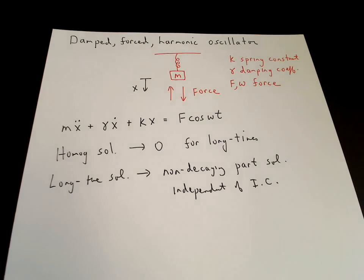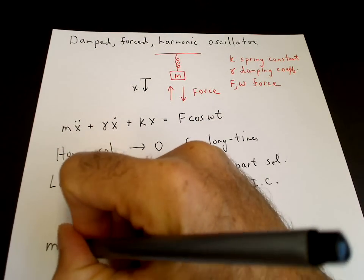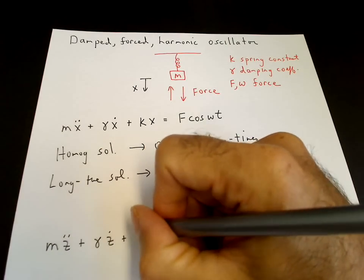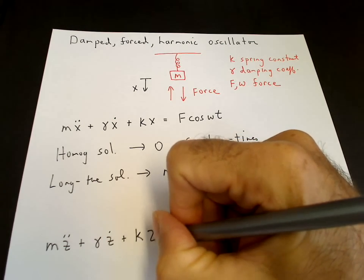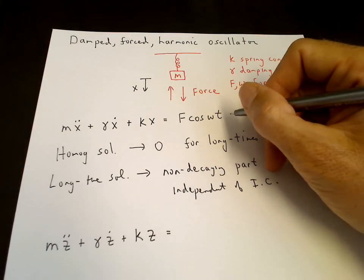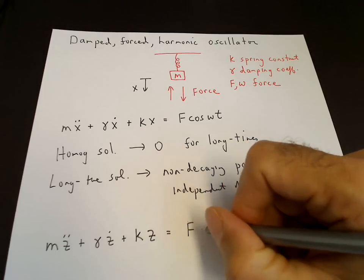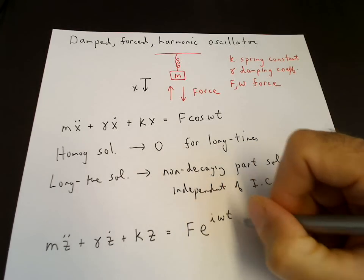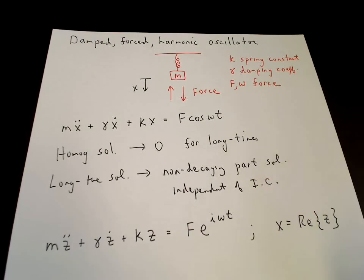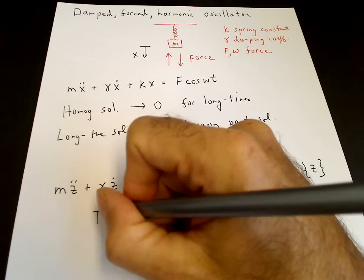Let's find this particular solution. I will use complex variables to do that. I will write the equation for z, converting to z equals x plus i y. Then if x is the real part of z, I can write cosine omega t as the real part of e to the i omega t. So the right-hand side becomes an exponential, and x is equal to the real part of z. That allows me to use an exponential ansatz to solve for the particular solution.